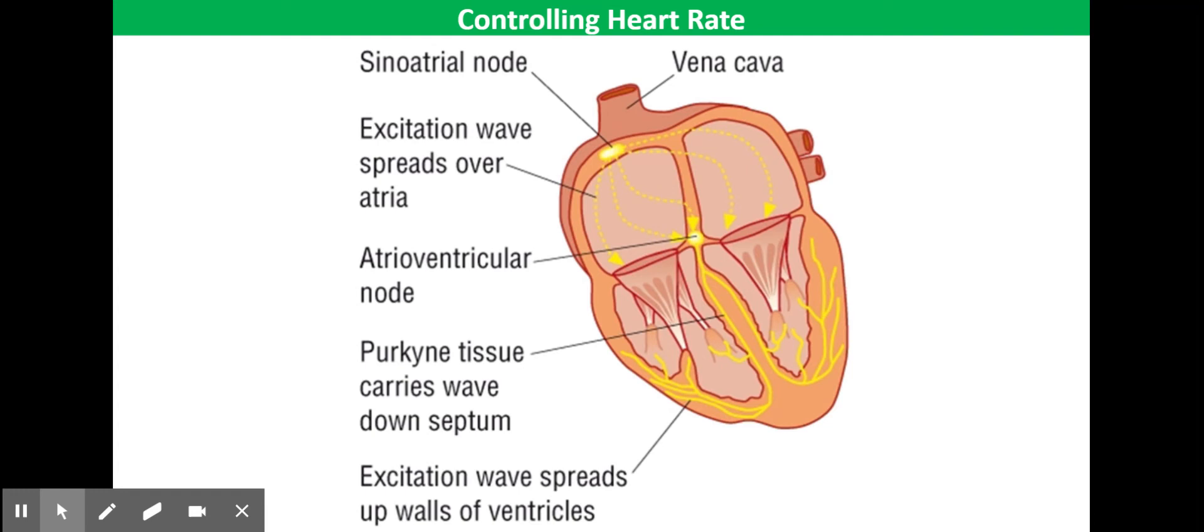Now that's just shown again here. So we've got the SAN and the wave of excitation spreading across the atria to the AVN, and then down the Purkinje fibers, and then the wave of excitation spreading up over the ventricle walls.